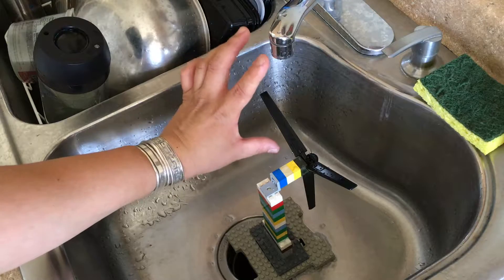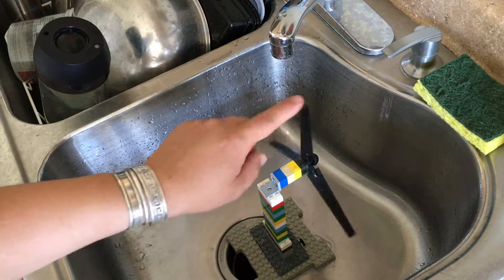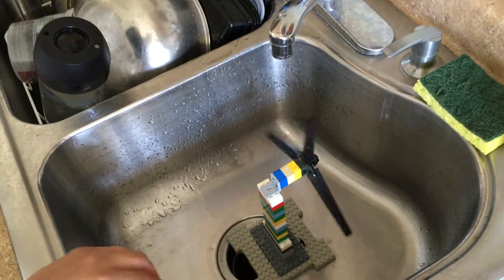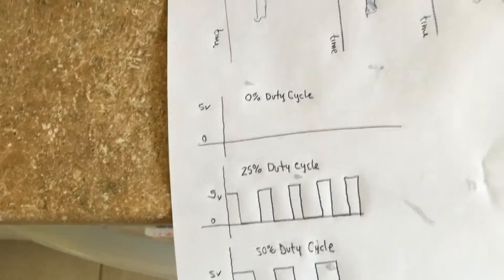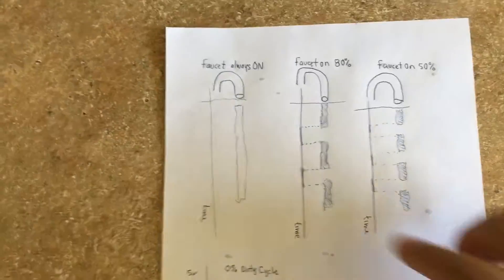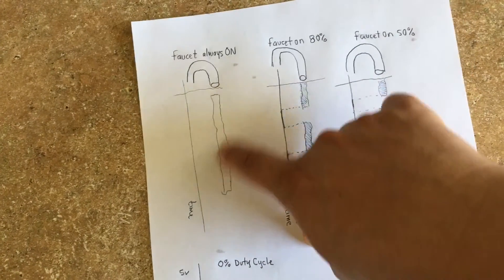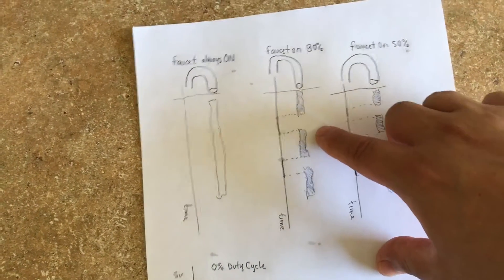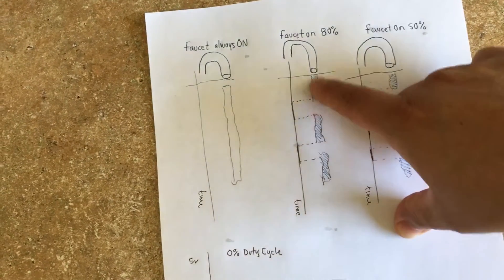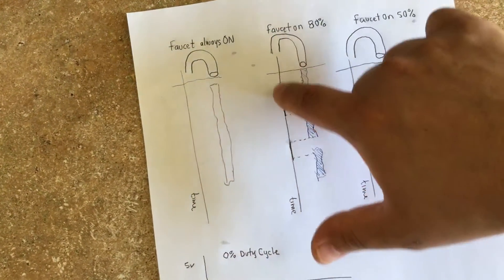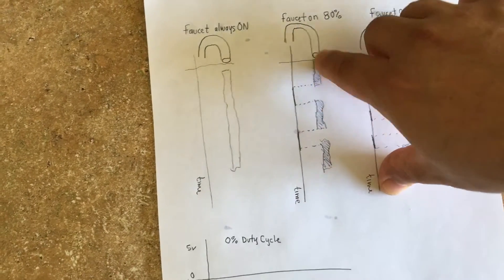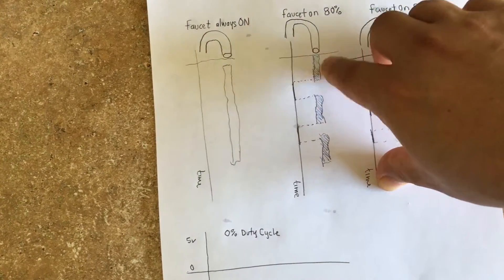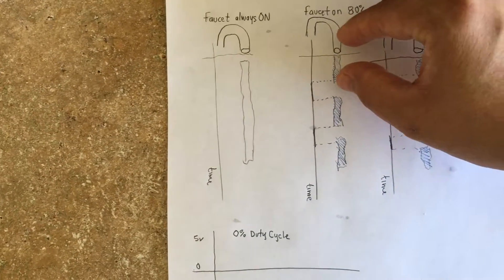That translates on the speed. The duty cycle of this pulse is the amount of water that hits this motor. I made this drawing here to explain that. You can see here — this is the faucet on all the time, it's a big water column. This is the faucet on 80% of the time. You can think of it as an inverted Cartesian coordinate system, where time is on this axis and the magnitude of my signal — in this case the water — is on the other.